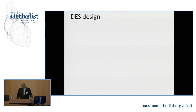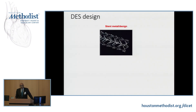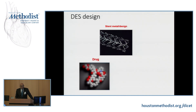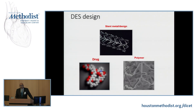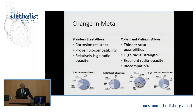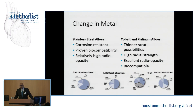What makes drug-eluting stents so significant? There are three parts to any stent: the stent metal or design, the drug, and the polymer coating that carries the drug. The polymer is a plastic layer put on the metal to which the drug molecule attaches. We have changed the metal — earlier bare metal stents used stainless steel, which required very thick struts for drug delivery. We have moved to thinner struts made of cobalt and platinum alloys, which have high radial strength, high radiopacity, and are biocompatible. All new-generation stents have moved away from stainless steel.